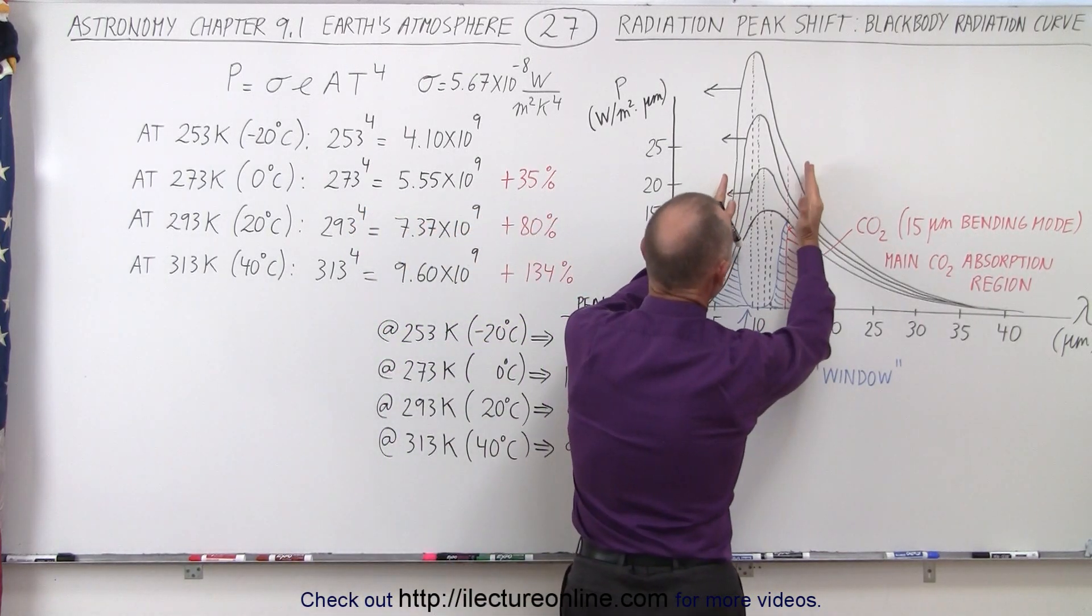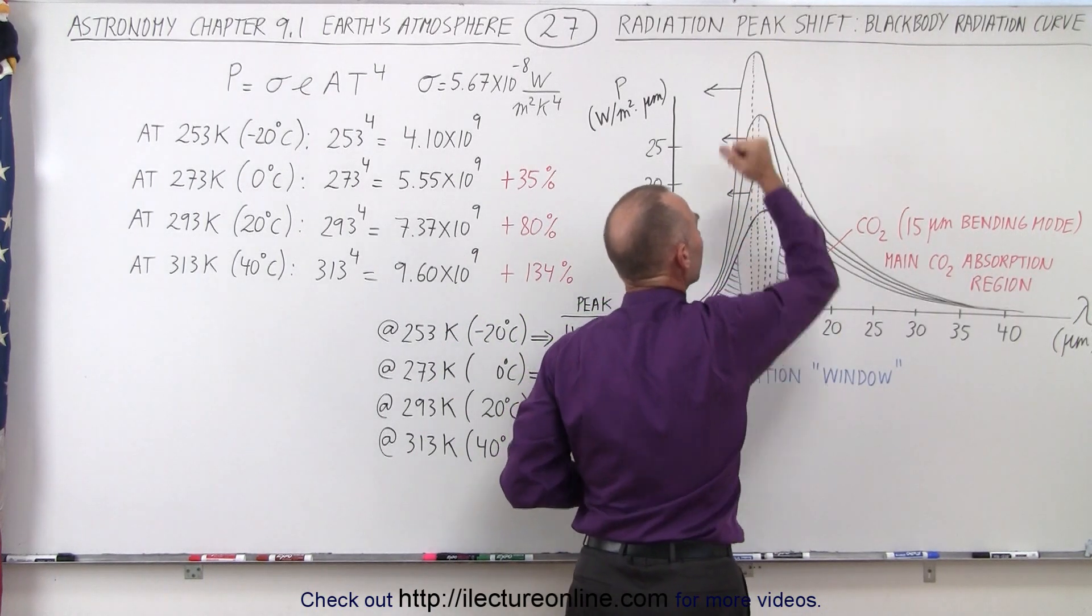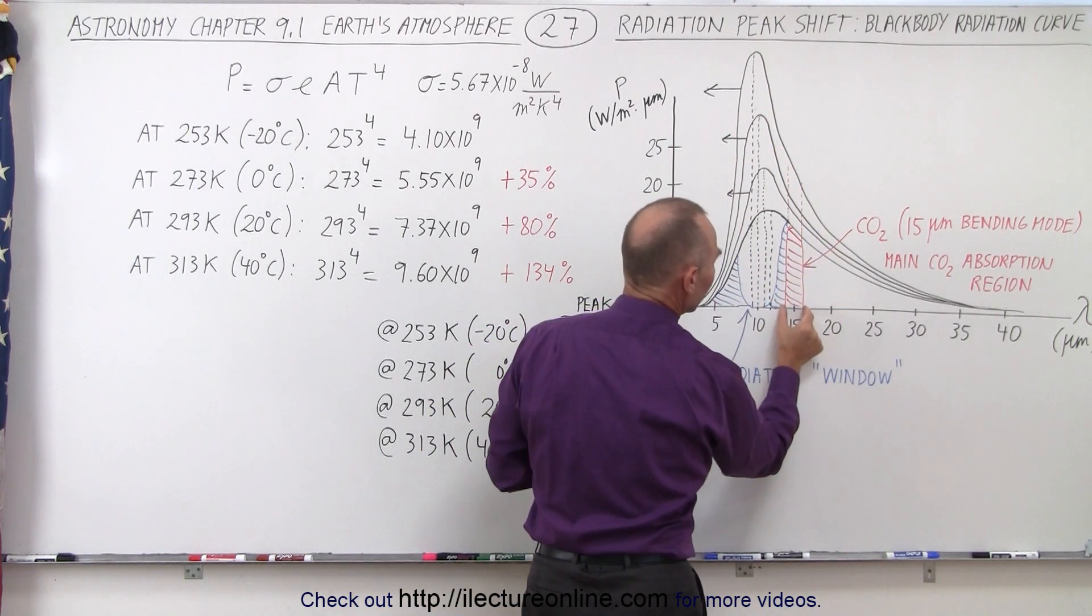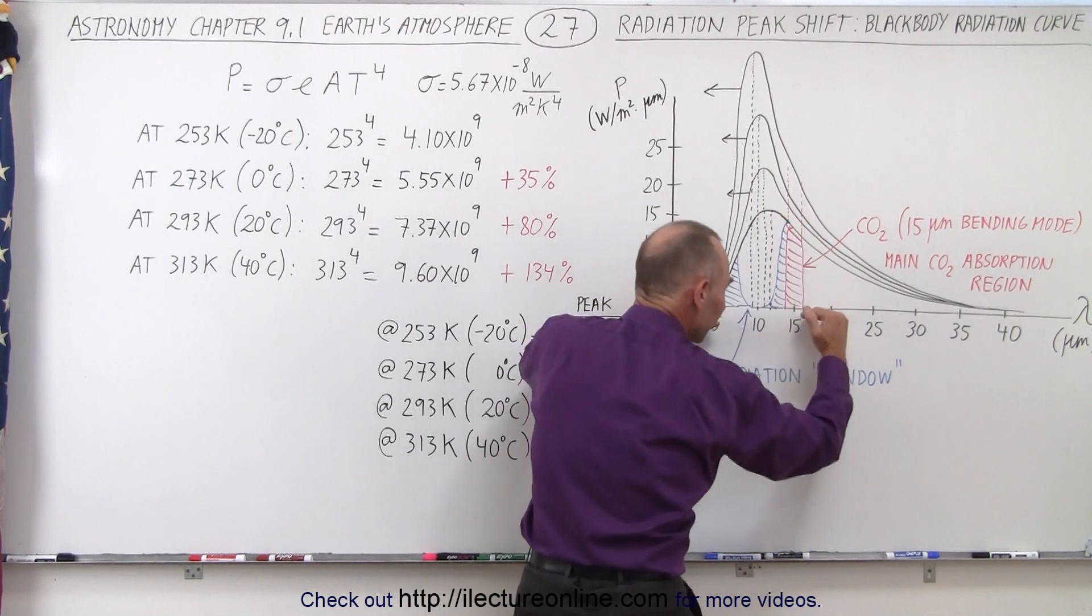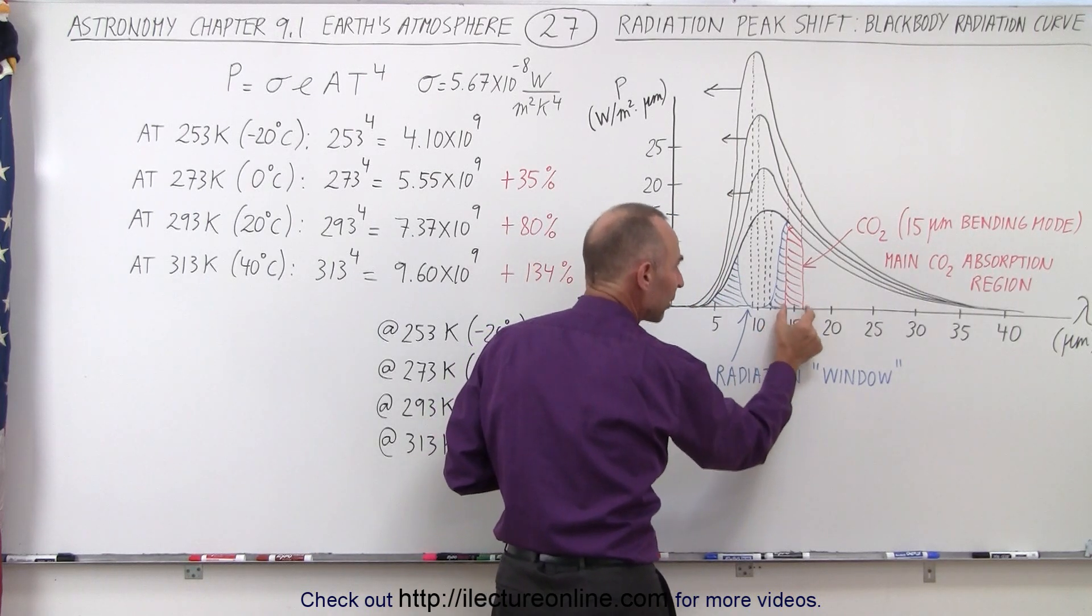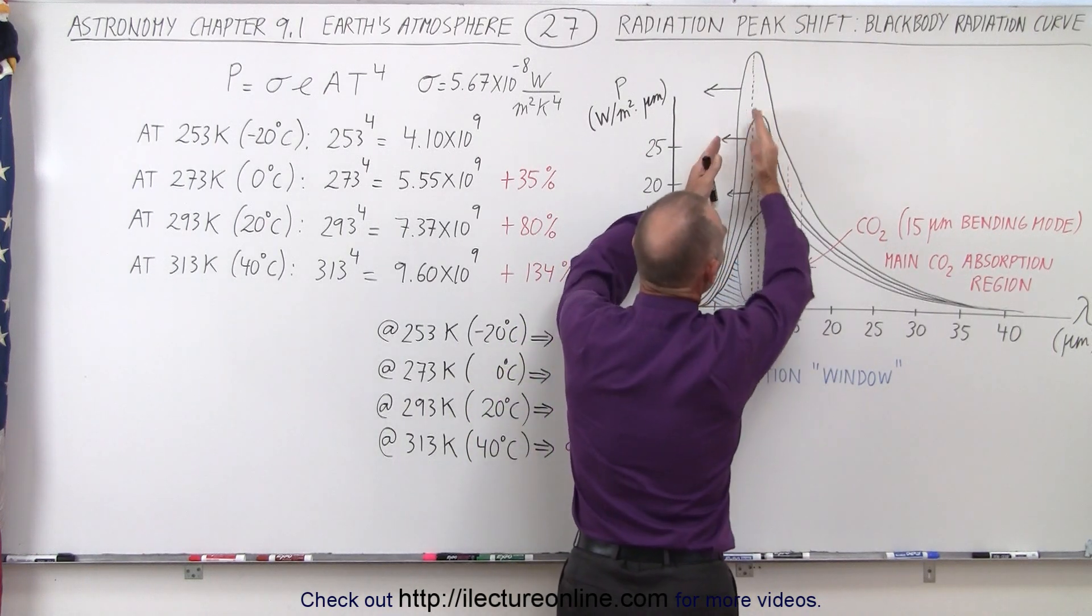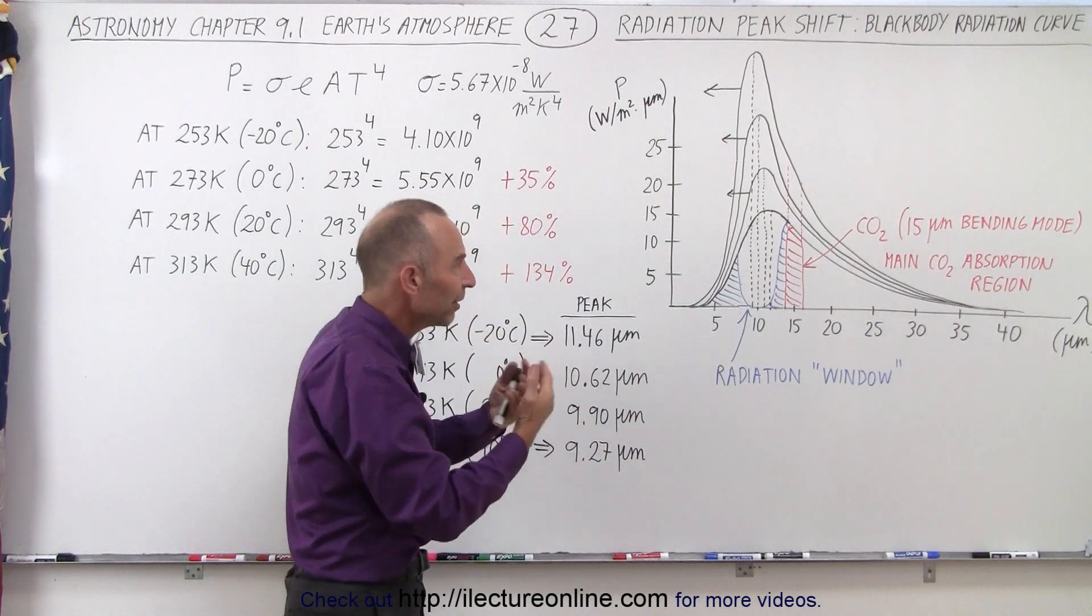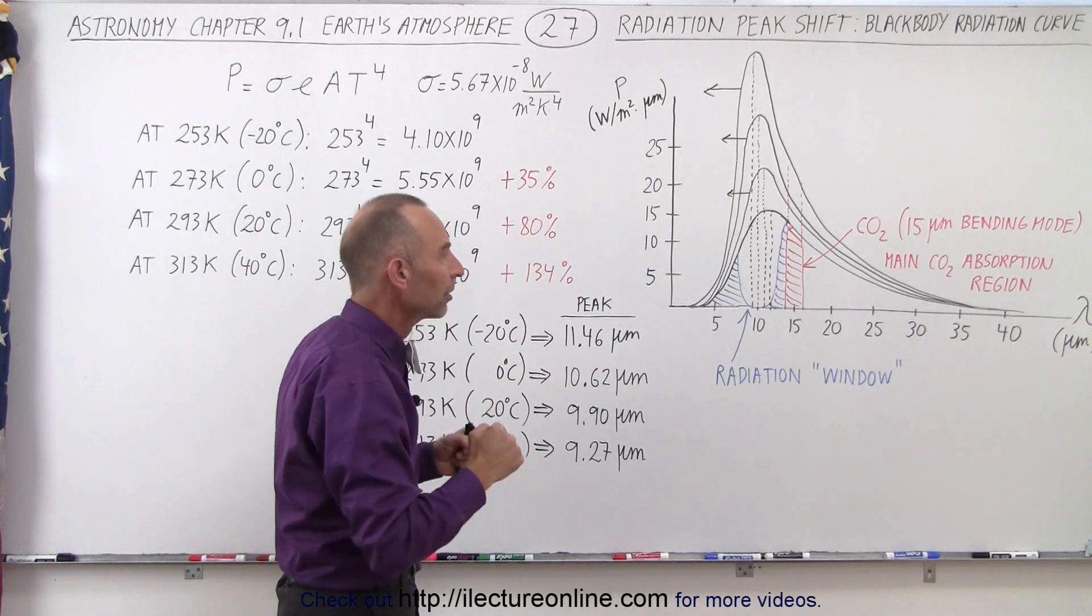Notice when the peak begins to shift to the left, first of all, a much greater amount of radiation is being emitted by the surface of the Earth. But since the peak is shifted to the left, it turns out that main band of carbon dioxide that absorbs the energy coming from the surface of the Earth in the wavelength from about 14 to 16 micrometers begins to shift relative to where the peak is. So it has less and less effect overall in the amount of energy being emitted into space versus the amount of energy being absorbed by the carbon dioxide.